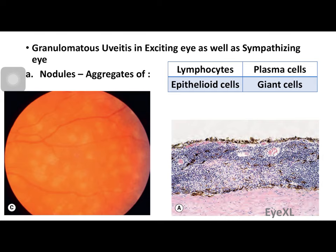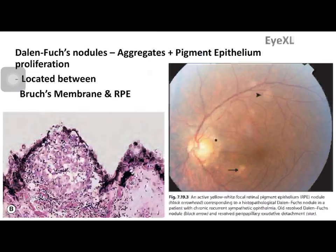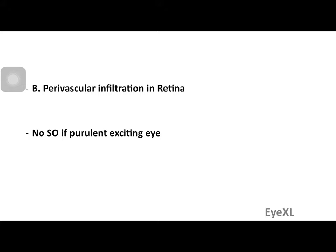The bottom right histological image shows the brown melanin pigment layer — pigment disturbance is seen in the retina or choroid in granulomatous uveitis. A very specific clinical feature called Dalen-Fuchs nodules is seen — a clinicopathological diagnosis requiring both clinical appearance and histopathological confirmation. These are aggregates of inflammatory cells with pigment epithelium proliferation, located between Bruch's membrane and the retinal pigment epithelium. The bottom left shows mounds of melanin pigmentation representing Dalen-Fuchs nodules; the right image shows an active nodule (arrowhead) and a healed chronic nodule (arrow).